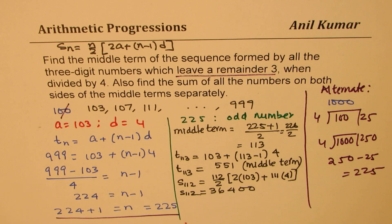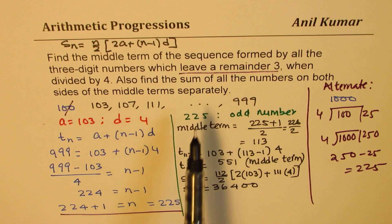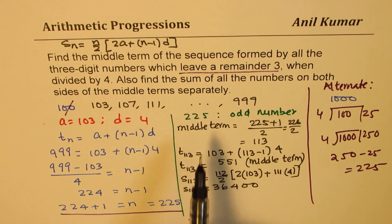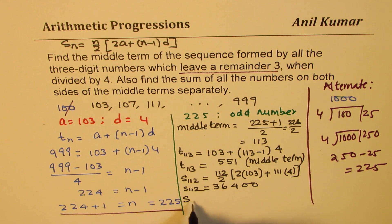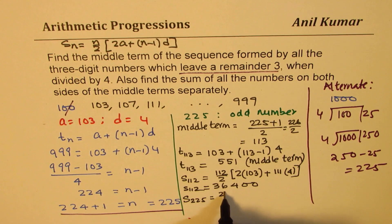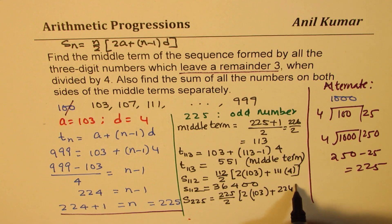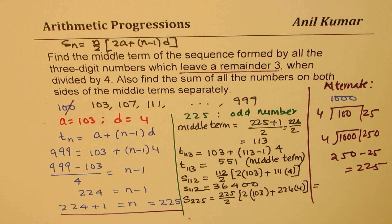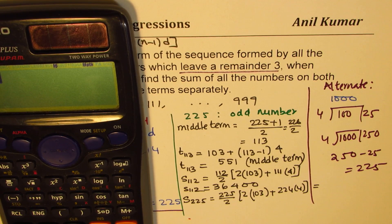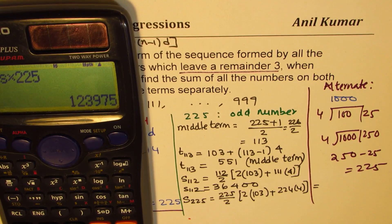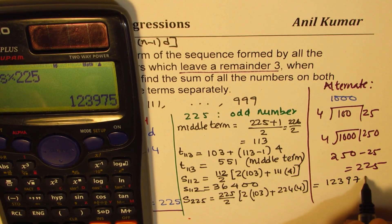Now, how do you find the sum of the later half? Now, let us see how to find the sum of all the numbers which are on the other side of the center value. So what we can do is we know there are total 225 terms, so we can find sum of 225 terms. So which will be 225 divided by 2, 2 times A which is 103 plus 1 less than 225. So straight away I am writing 224 times 4. Let's calculate this value. So we have 2 times 103 plus 224 times 4. We'll divide this by 2 and then multiply by 225 to get the sum. So this sum is 123,975.